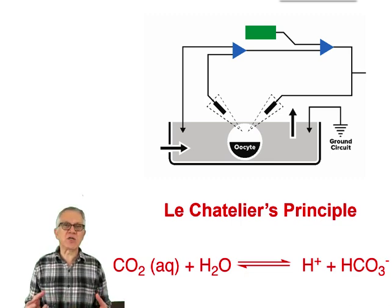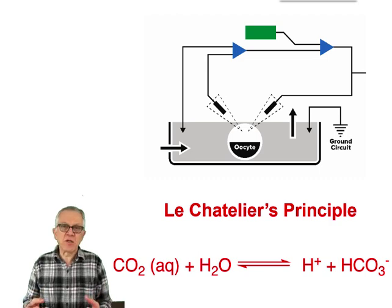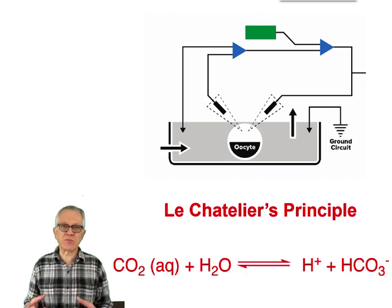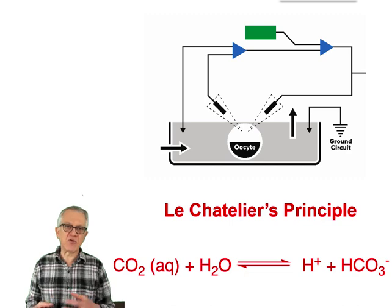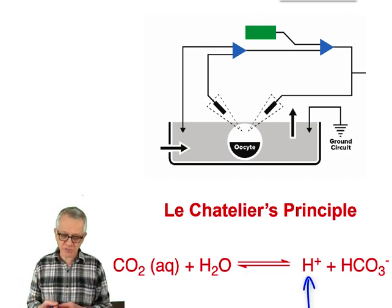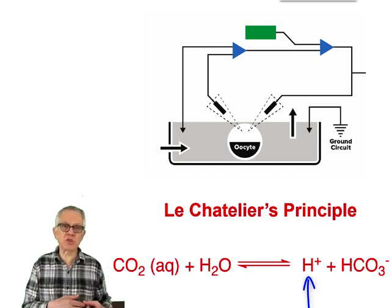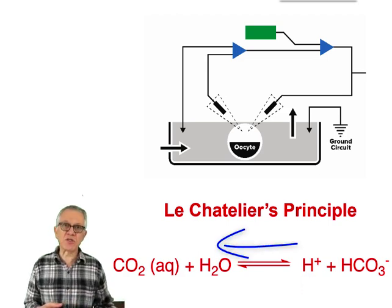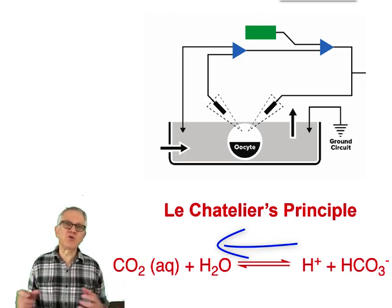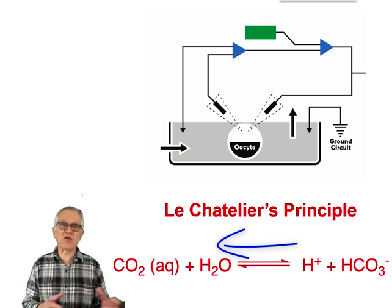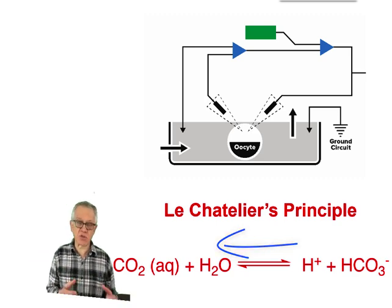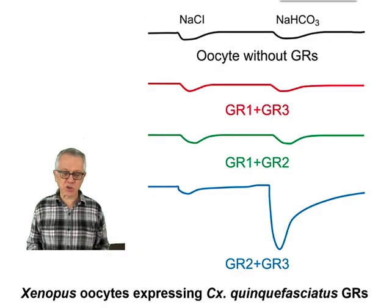The idea is that if you have this receptor expressed in an aqueous system, you can use the Le Chatelier principle. Le Chatelier's principle shows that by shifting this equilibrium — for example, if you increase the concentration of protons by lowering the pH — the equilibrium is going to shift to the left, increasing the concentration of CO2 and decreasing the concentration of bicarbonate. So if you know whether the concentration of one species is increasing or decreasing, and you know the receptor response is increasing or decreasing, we can make a direct correlation.